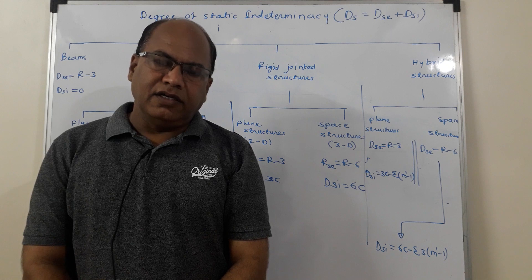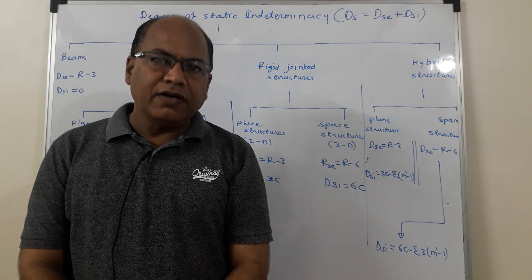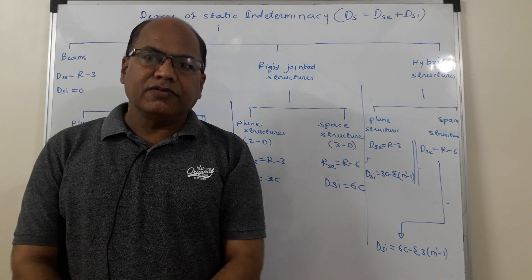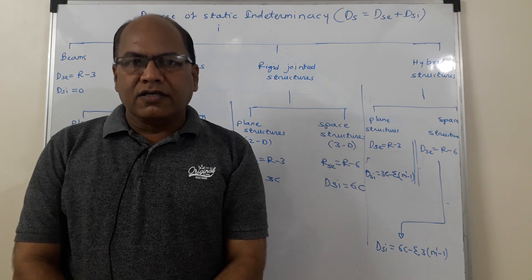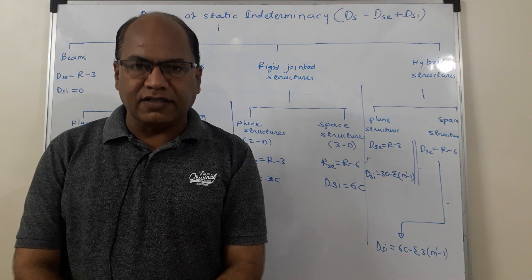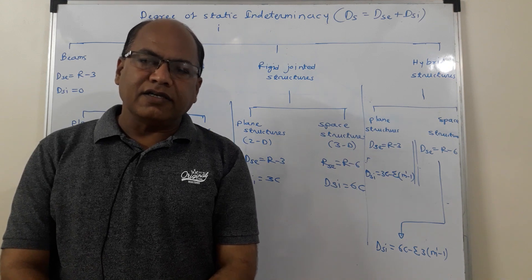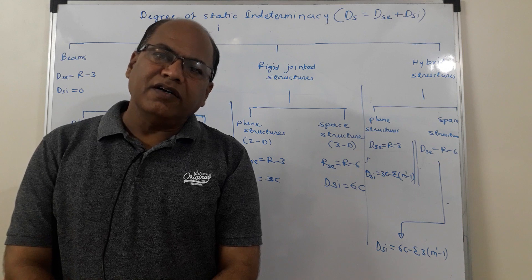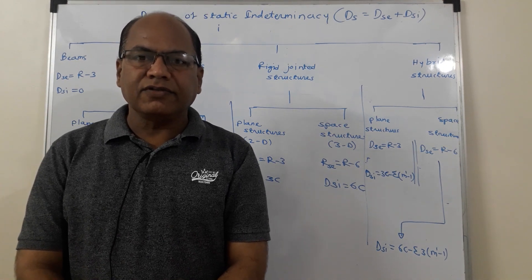A given structure is said to be statically indeterminate if it cannot be completely analyzed with the help of available equations of equilibrium. Structures are classified into three types: skeletal structures, surface structures, and solid structures. Skeletal structures look like a skeleton — for example, trusses and building frames. Surface structures are planar structures in which two dimensions are larger compared to the third dimension (thickness), and an example is a slab. In solid structures, all three dimensions are important — examples include dams and massive foundations.